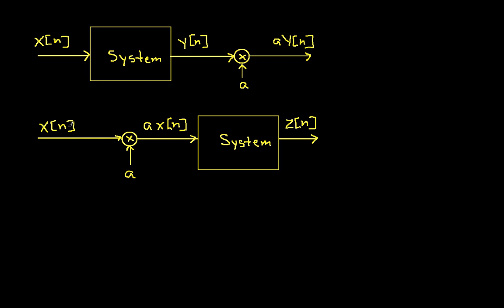Then, you take the same signal, you multiply it by the constant first before you run it through the system, and then you run it through the system and see what comes out. And if what comes out after you've multiplied the input by a is equal to what you got when you multiplied the output by a, then your system satisfies the property of homogeneity. And again, this is the first half of determining whether or not something's linear.